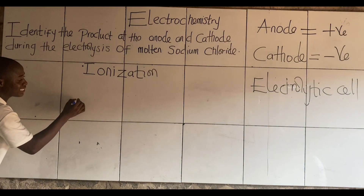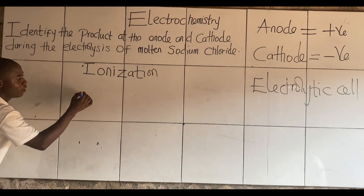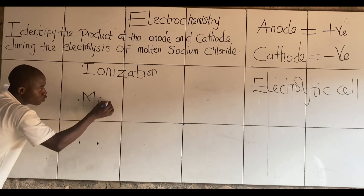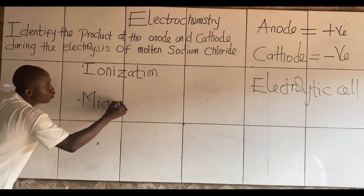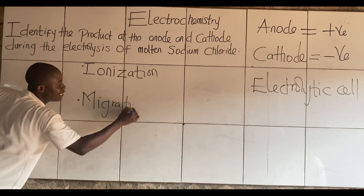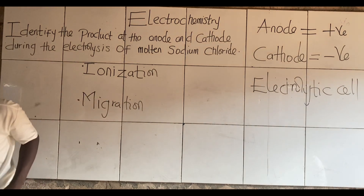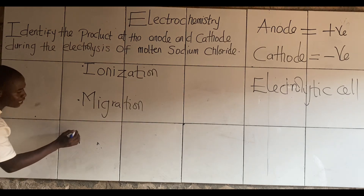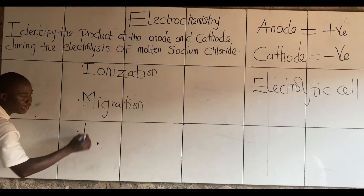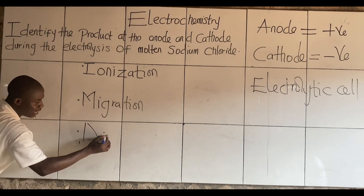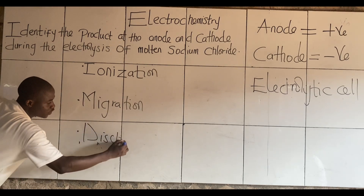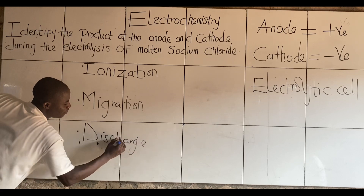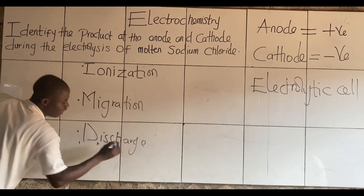What's the other step? Migration. Very good. So after we are done ionizing, we then migrate them. And what's the last step? Discharge. So how do we solve this question? Very easy.